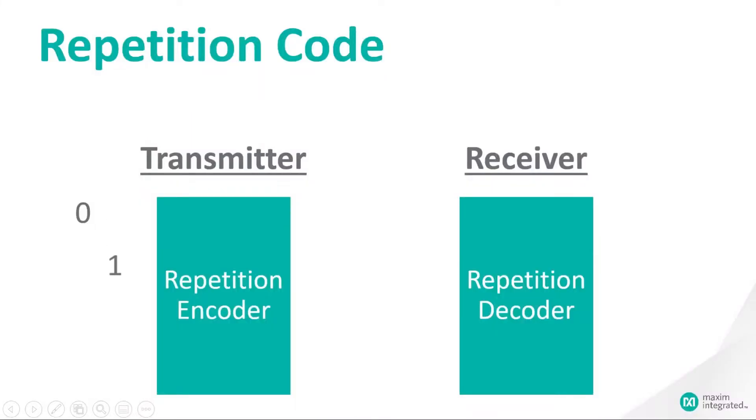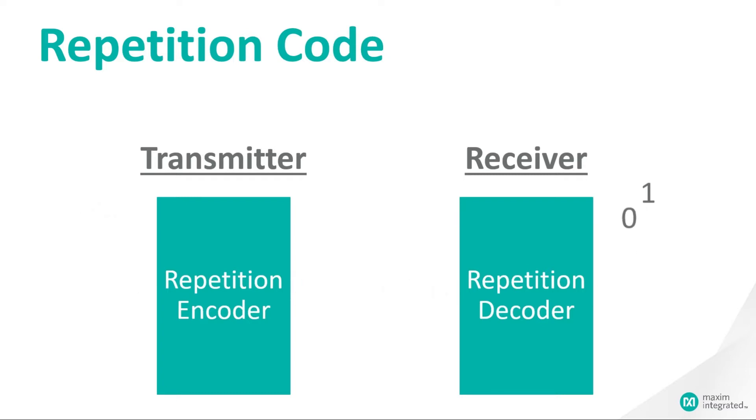The first and by far simplest error correction scheme is repetition code. As the name suggests, repetition code is essentially just sending the same transmission multiple times. Instead of sending just one or zero, the transmitter will actually send three or more ones and zeros. So a one turns into a one-one-one, and a zero turns into a zero-zero-zero.